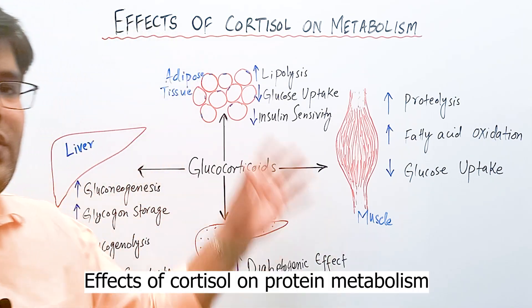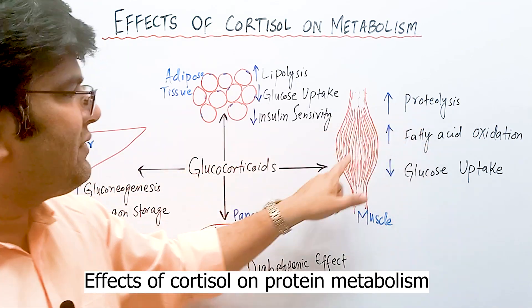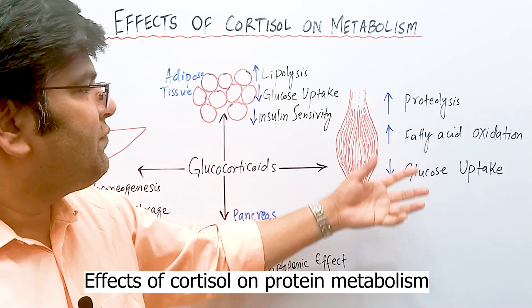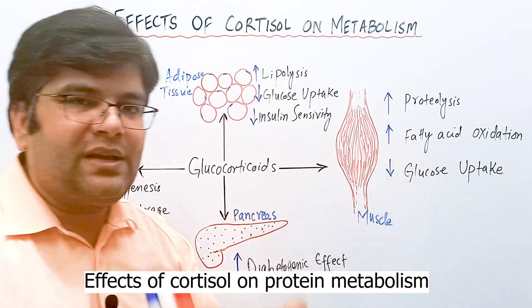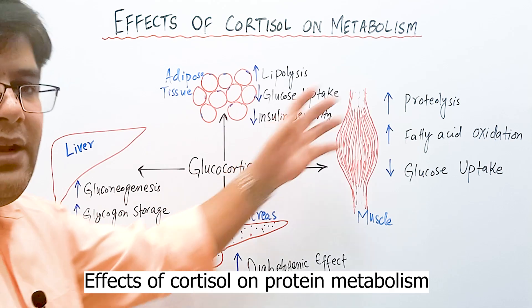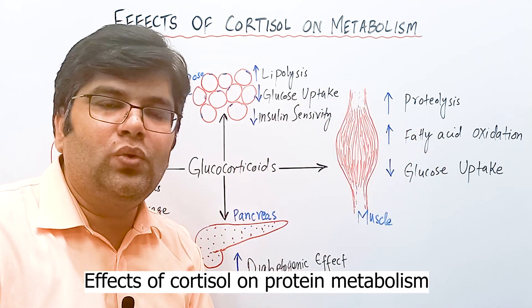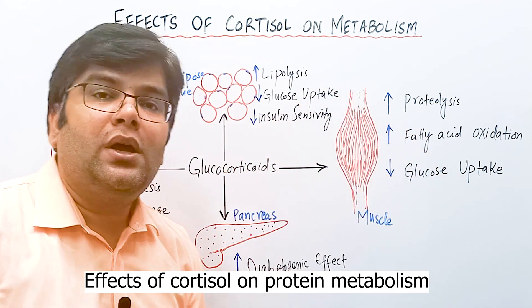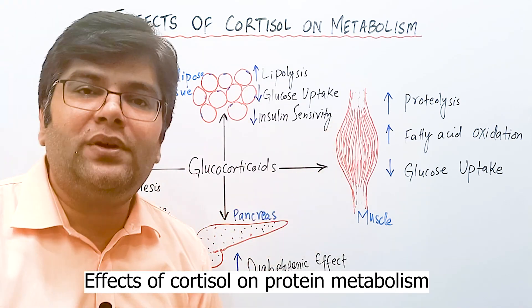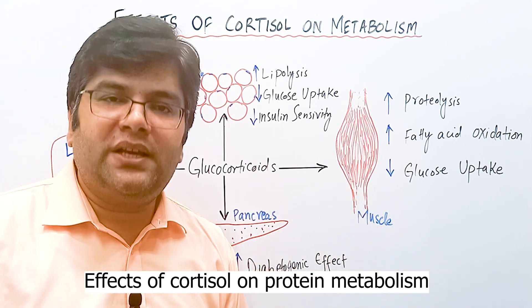Cortisol causes proteolysis in skeletal muscle, releasing amino acids such as alanine from protein breakdown. These amino acids travel through the blood to the liver, where they are used for gluconeogenesis — the synthesis of new glucose. Amino acids are also used for synthesis of new proteins in the liver.